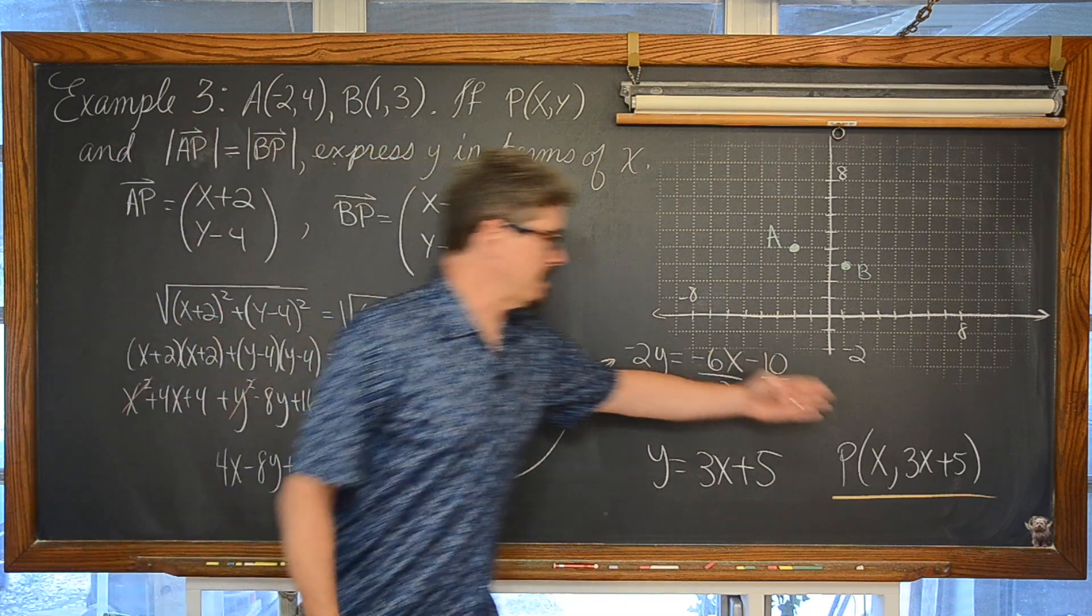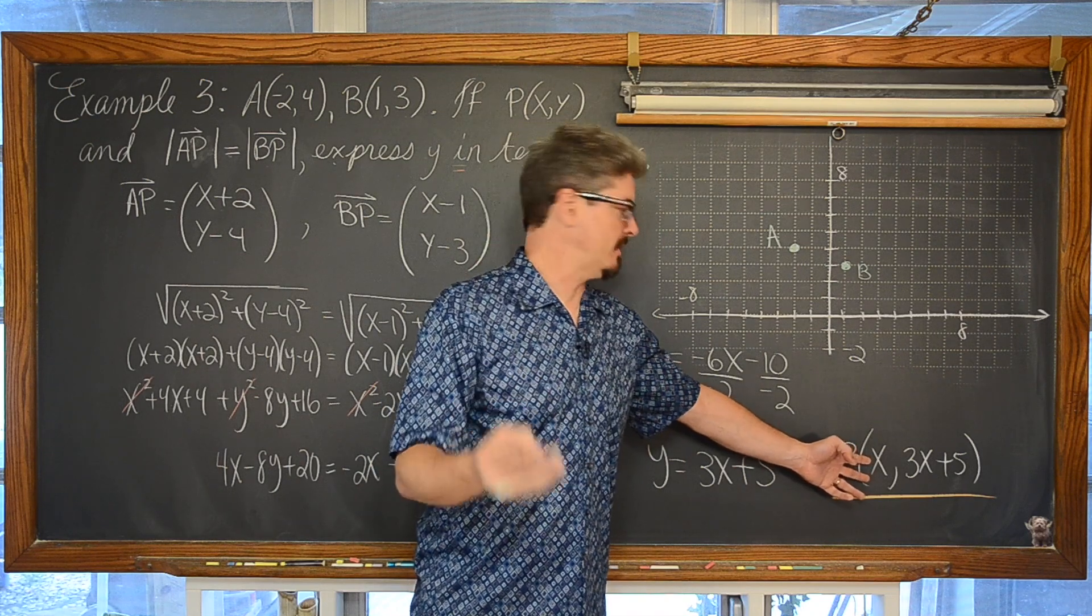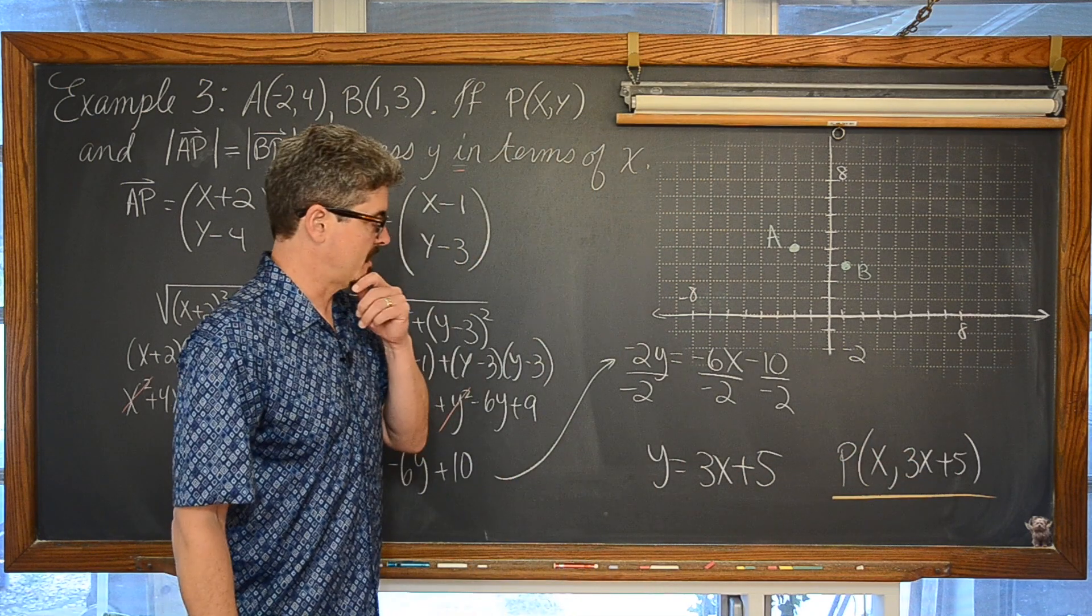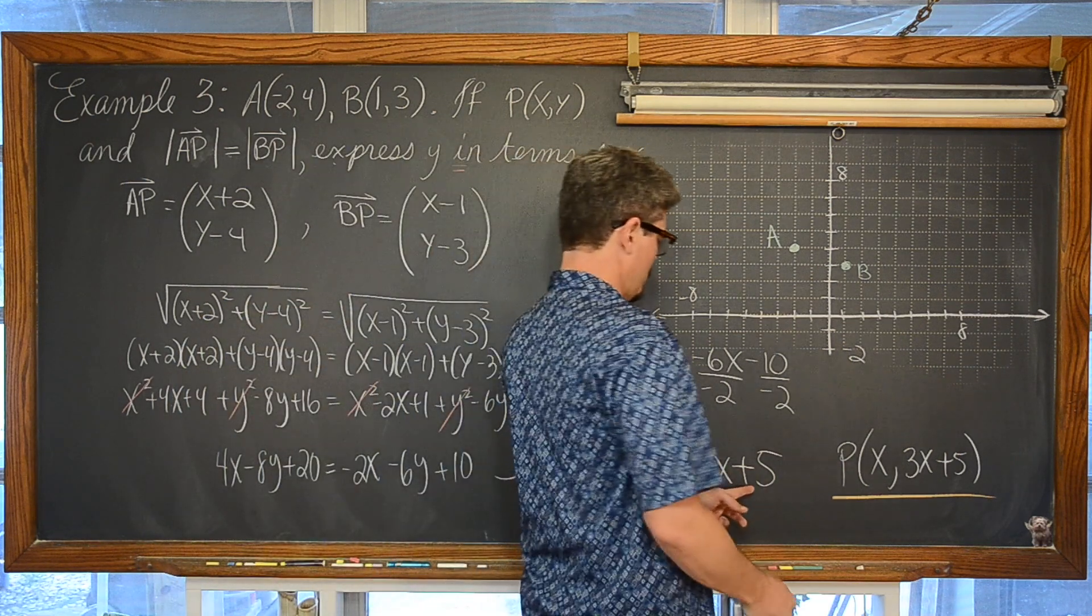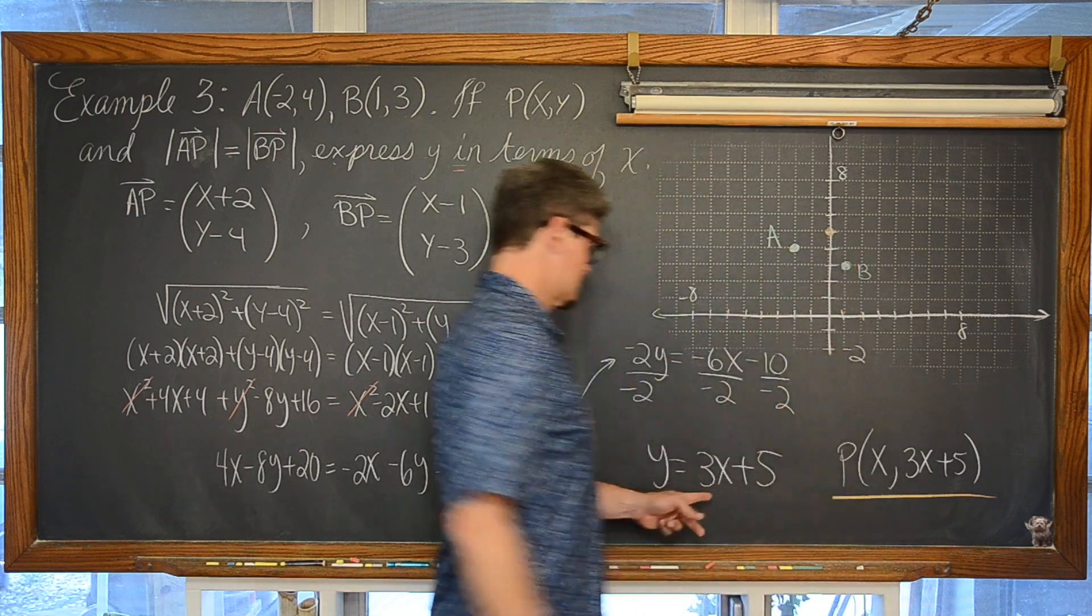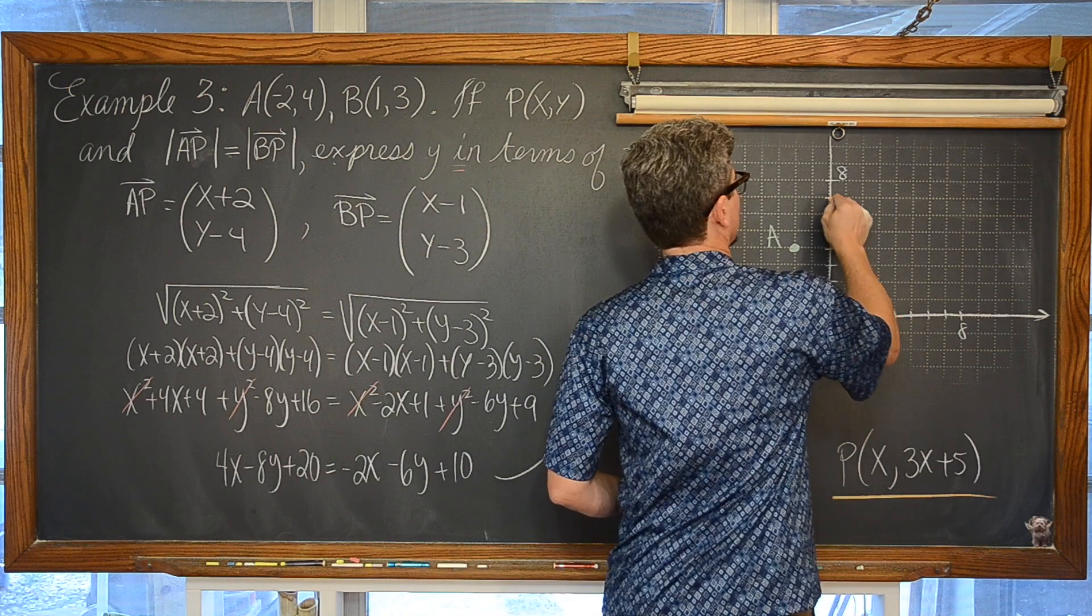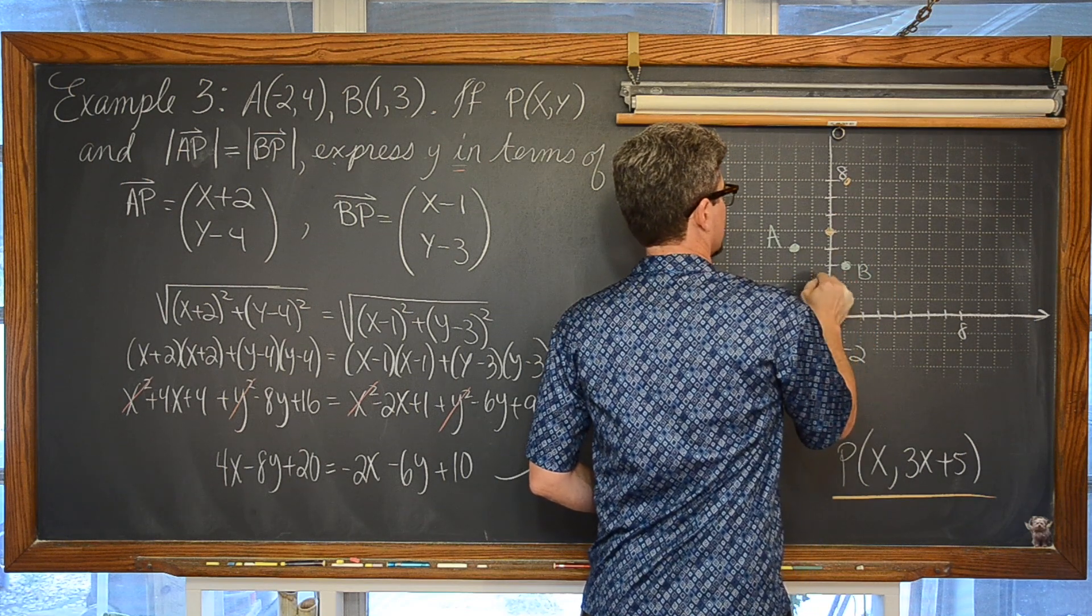And we have got this point p defined by an unknown value of x. And then based on that random, not random, but based on any coordinate of x, you have a y coordinate which is 3x plus 5. Well y equals 3x plus 5, of course that is a line with a y intercept of 5 and a slope of 3. So up 3 over 1, down 3 over 1.